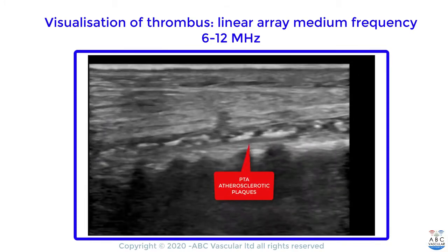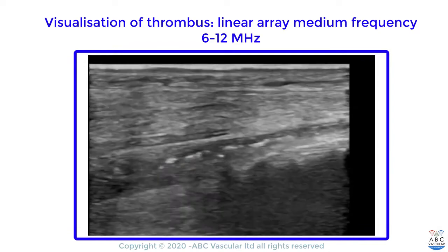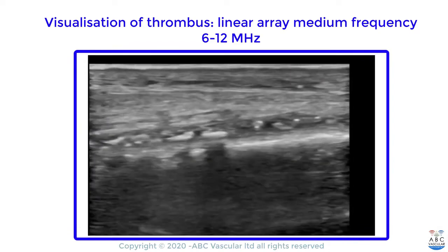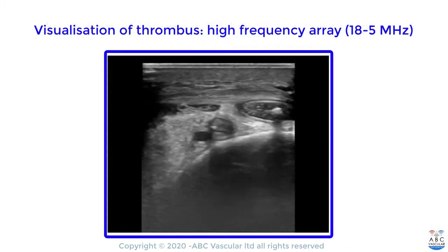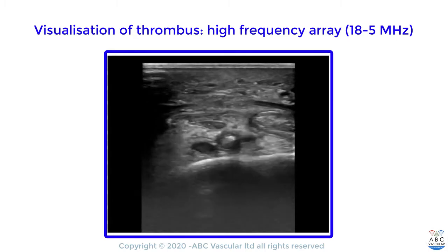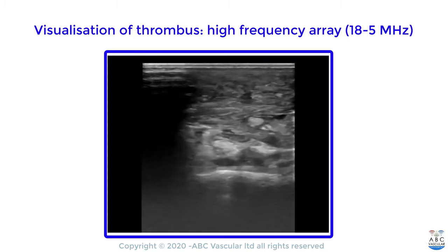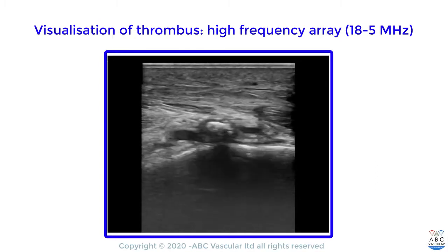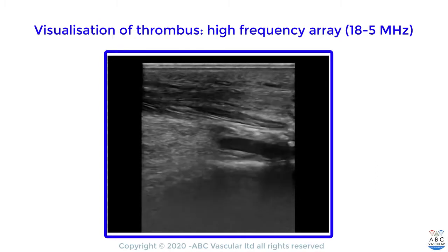In order to improve the visualization of atherosclerotic disease in the posterior tibial artery, we can use a linear array with higher frequency at the level of the distal posterior tibial artery. This will improve the lateral resolution and provide better visualization of the occlusive thrombus noted throughout the posterior tibial artery.